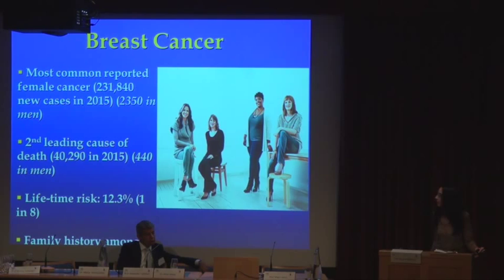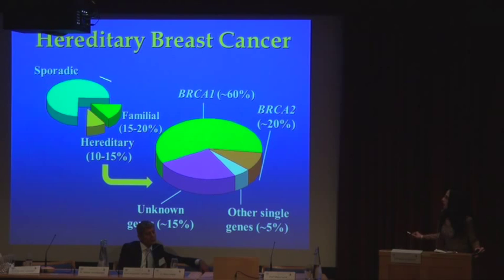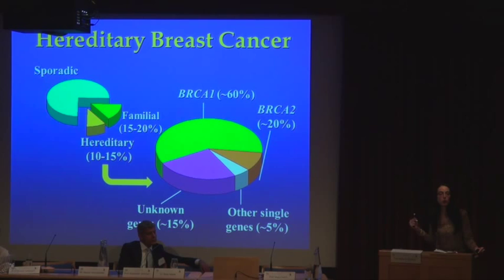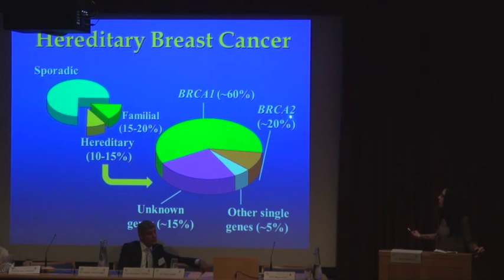Besides age, family history is the most significant risk factor for breast and ovarian cancer. The majority of breast cancer cases in any given population are common or sporadic. About 10 to 15 percent of breast cancer cases are hereditary, meaning they are due to segregation of a single gene with mutations that confer very high risk of breast cancer. Mutations in two genes — BRCA1 and BRCA2 — which stand for the first and second breast cancer genes identified, account for 80 percent of hereditary cases of breast cancer.